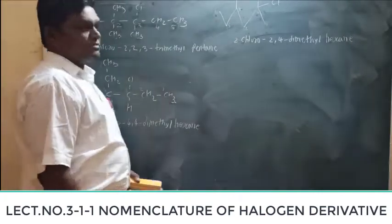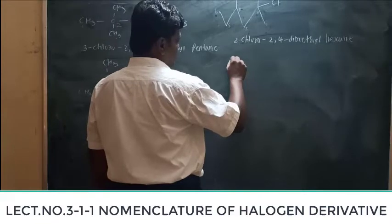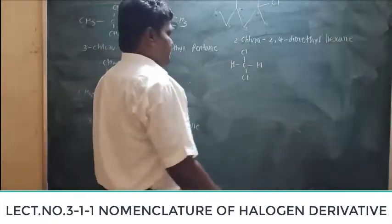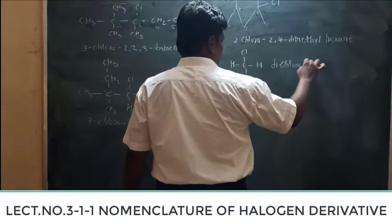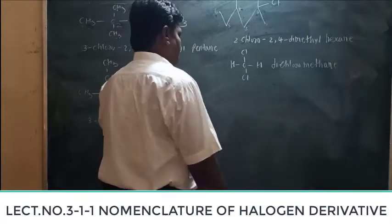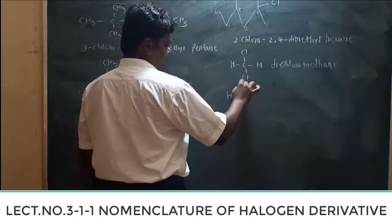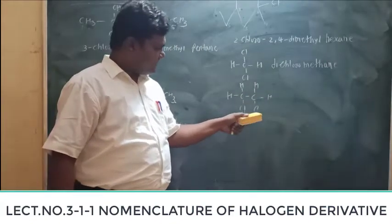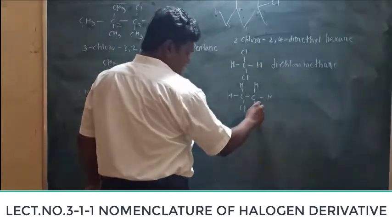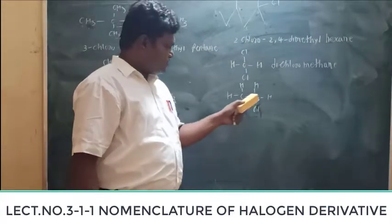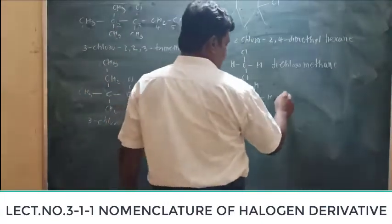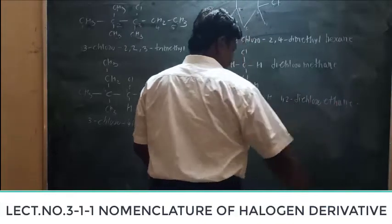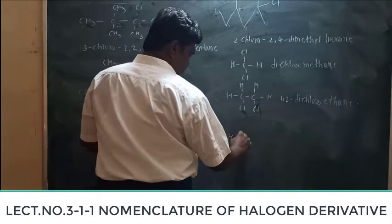Now let's start with examples of dihalogen derivatives of haloalkanes. The first compound has two chlorine atoms on one carbon — the name is dichloromethane. For the next compound, the first carbon atom contains a chlorine atom and the second carbon atom also contains a chlorine atom, so the IUPAC name is 1,2-dichloroethane.